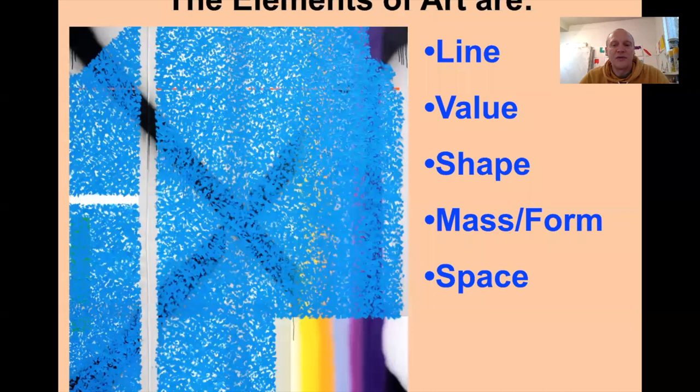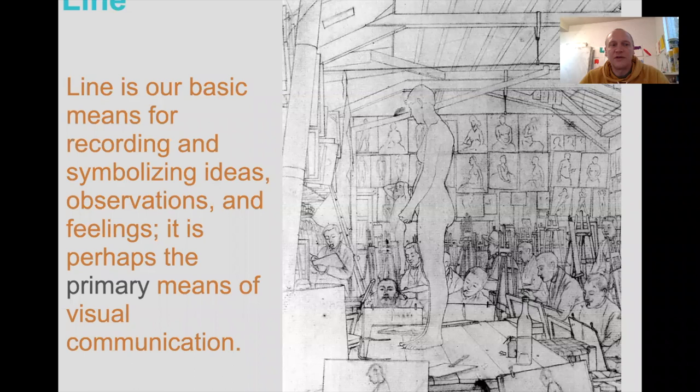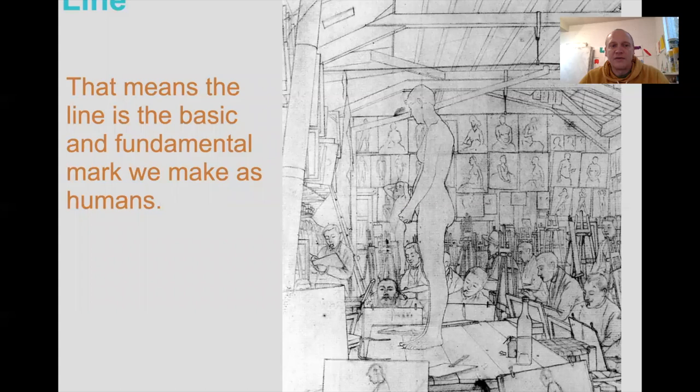Where I used 'form' there, I was talking about three-dimensionality in this list. We'll start with the most basic element: line. It's our basic means for recording and symbolizing ideas, observations, and feelings — perhaps the primary or first way of communicating visually. The line is basic and fundamental; it's the first mark that we made as humans.